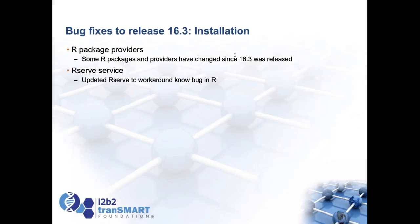A common issue with TranSMART is that R packages need to be updated regularly. We're hoping to provide something like a Docker instance for the R server to simplify that, so you can just get one that has everything built in automatically. There was also an issue in this release where you have to download an updated version of the R server from elsewhere because the official one has a bug that makes it incompatible and produces error messages when running some jobs. We'll try to provide an R server you can just download and use.